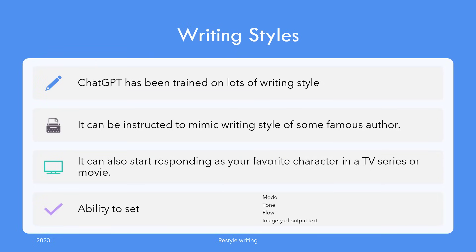In addition to writers, you can ask it to write as famous characters in a TV series or movie, and more often than not ChatGPT would be able to do so. You can set the flow, tone, mood, and imagery of the output text by accompanying instructions. Be as creative as you can be and be amazed.